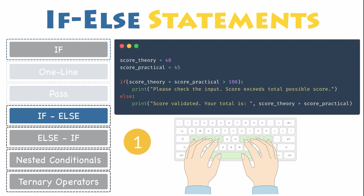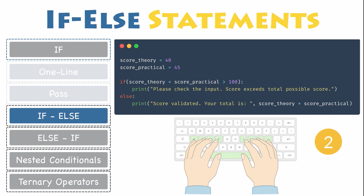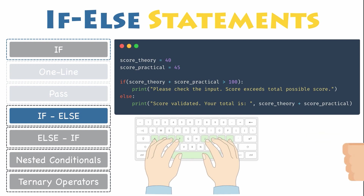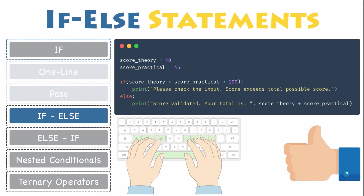Here is a solution to this problem. Declare two variables: score_theory equals 40, score_practical equals 45. Then write the if-else statement to check whether the total score is valid or print a warning message when it is not. If score_theory plus score_practical is greater than 100, print 'Please check the input — score exceeds total possible score.' Else, print 'Score validated — your total is score_theory plus score_practical.'